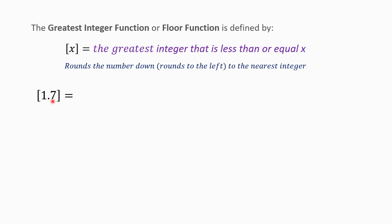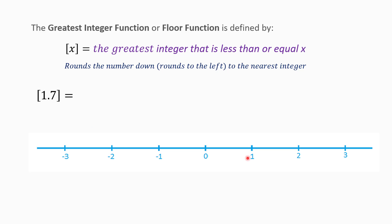For example, suppose we want to find the greatest integer of 1.7. What is the greatest integer number that is less than 1.7? If you consider a number line, 1.7 is approximately here. From the official definition, the greatest integer is the greatest integer less than or equal to that value, which is 1. Or more simply, if we run 1.7 down to the nearest integer, we get 1. So the greatest integer of 1.7 is equal to 1.